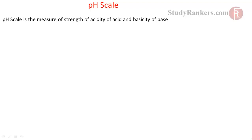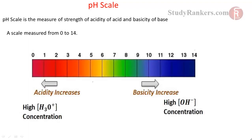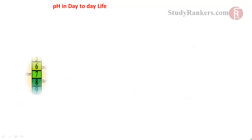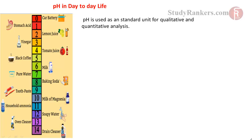The pH scale is the measure of the strength of acidity of an acid and basicity of a base. It is a scale measured from 0 to 14. If the pH of a solution is between 0 to 7, the solution is acidic. If it is 7 to 14, the solution is basic. If it is 7, the solution is neutral. Acidity increases with decrease in pH value. pH values of some day-to-day life examples are indicated here.